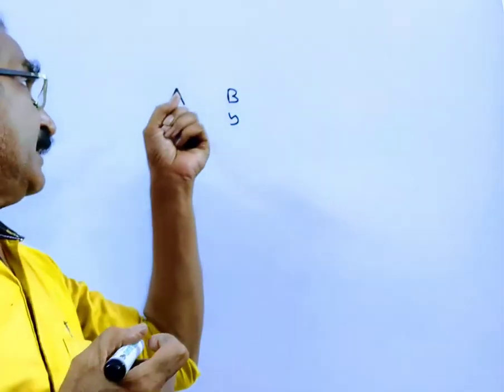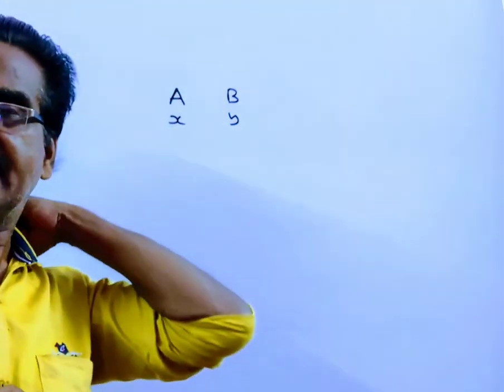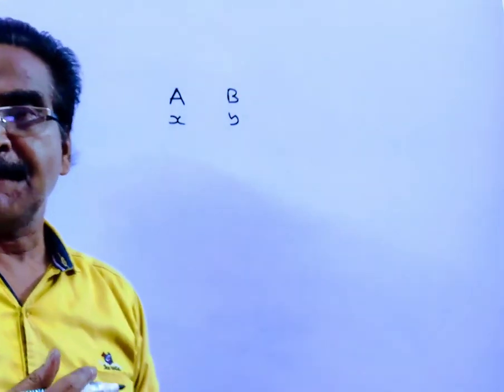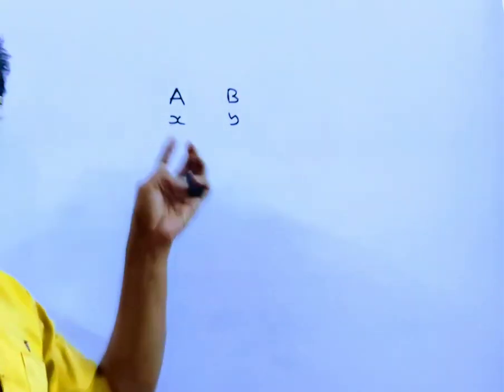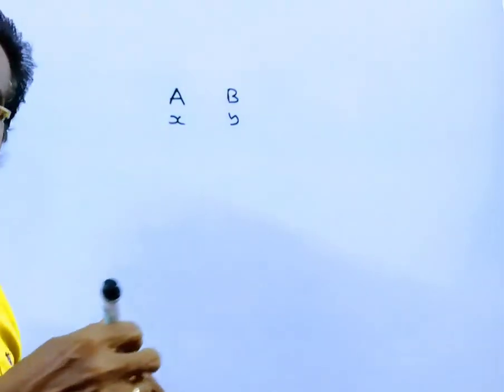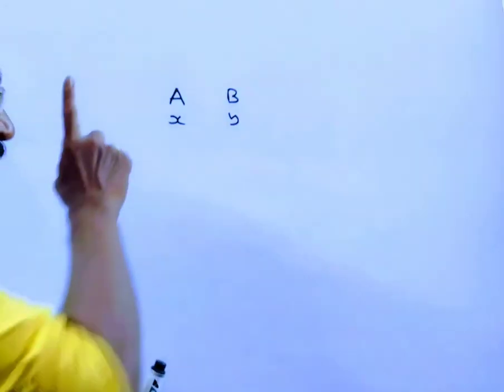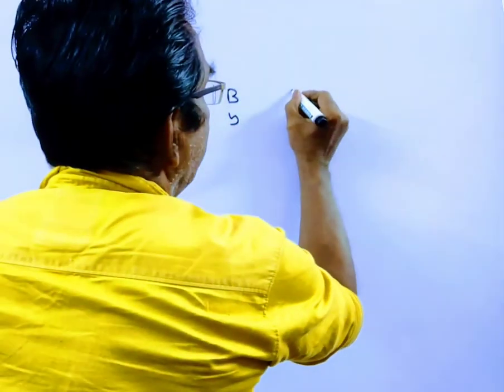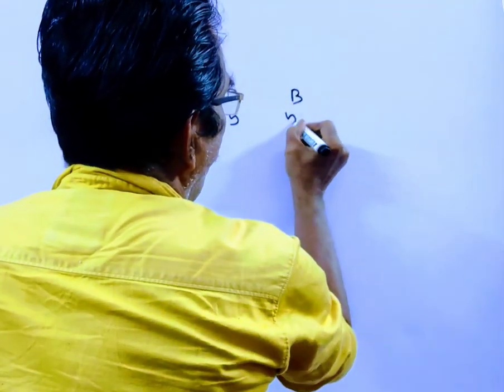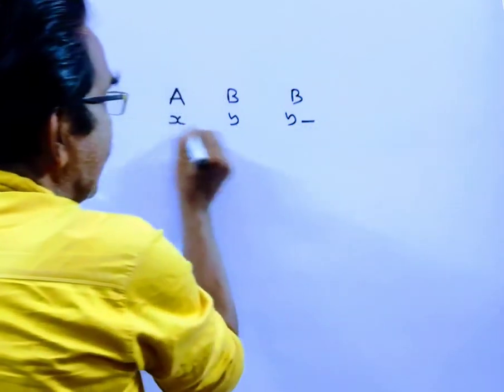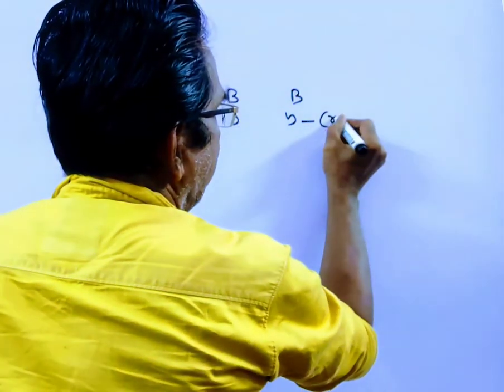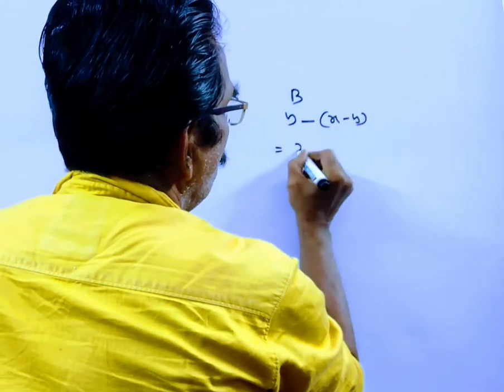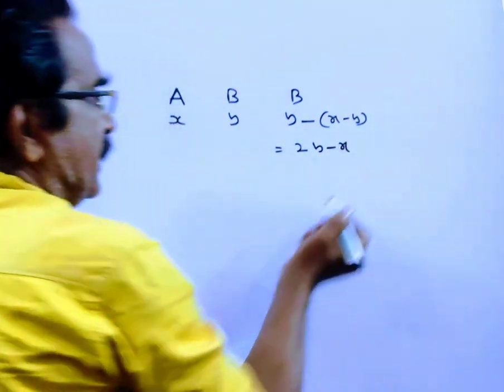Say the age of A is X and the age of B is Y. If A was at the age of B, then B would be Y minus (X minus Y), that is equal to 2Y minus X.